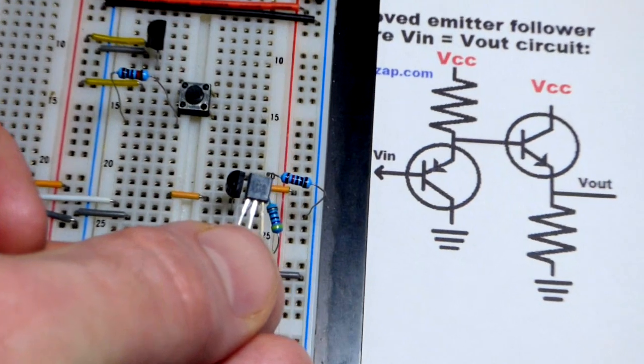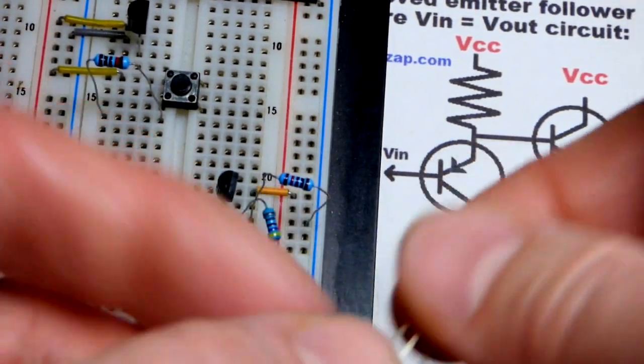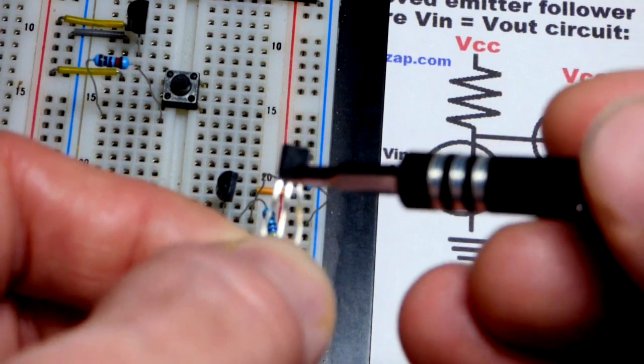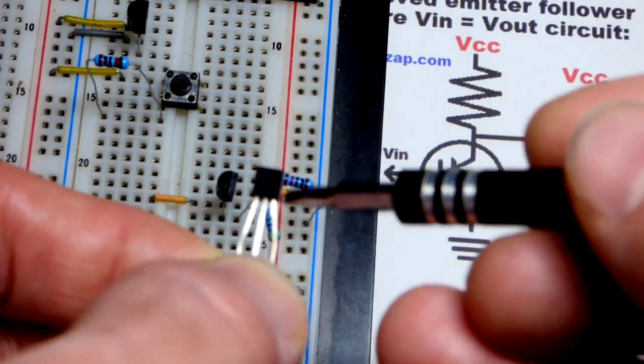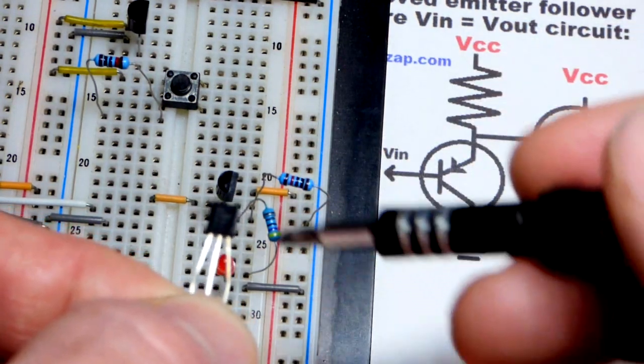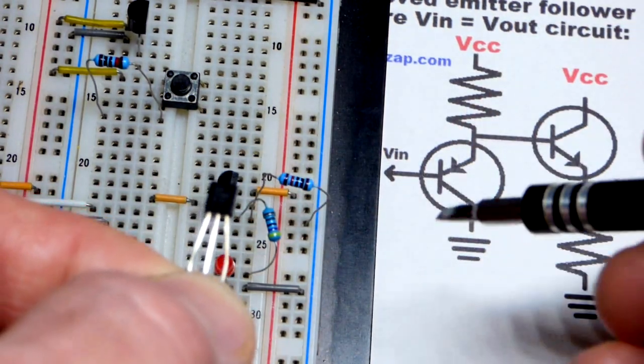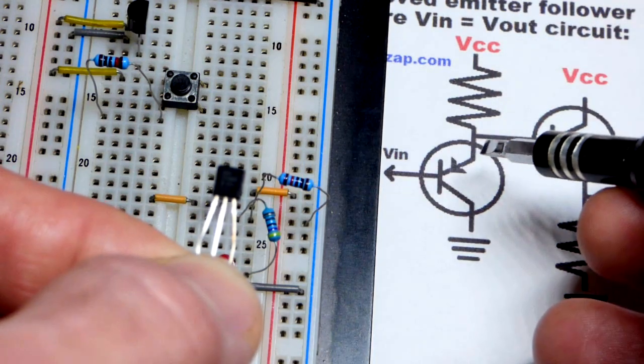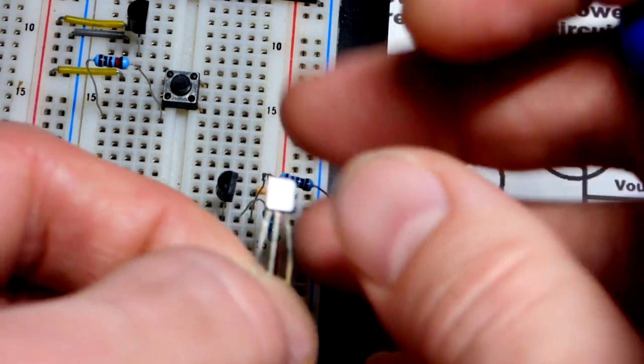This is a 2N3906. Again it begins with 2N, it's a bipolar junction transistor: left pin emitter, middle pin base, right pin collector. Same pin layout as the 2N3904 but their chemistries are different, so current goes the opposite direction in them. The emitter is on top as far as the board is concerned.